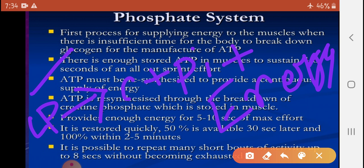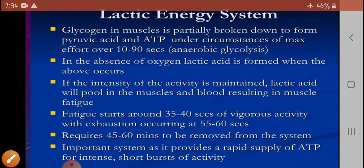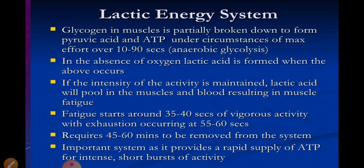The lactic acid system: glycogen in the muscle is rapidly broken down to form pyruvic acid and ATP under maximum effort of 10 to 19 seconds — anaerobic glycolysis. In the absence of oxygen, lactic acid is formed. If the intensity of the activity is maintained, lactic acid pools in the muscles and blood, resulting in muscle fatigue starting around 30 to 40 seconds. Vigorous activity with exhaustion occurring at 55 to 60 seconds requires 45 to 60 minutes to remove lactic acid from the system. It provides a rapid supply of ATP for short blasts of activity.